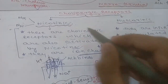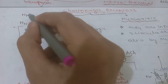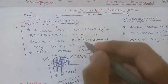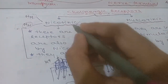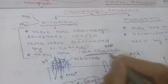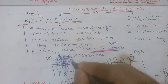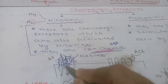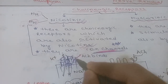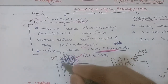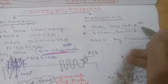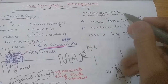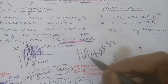Cholinergic receptors are of two types: nicotinic and muscarinic. Nicotinic receptors are further divided into NM (neuromuscular) and NN (neuronal) types. Nicotinic receptors are ion channels composed of five subunits; when acetylcholine binds, the subunits separate forming a pore allowing sodium influx and potassium efflux. Muscarinic receptors are GPCR-linked receptors, named because they are activated by muscarine.